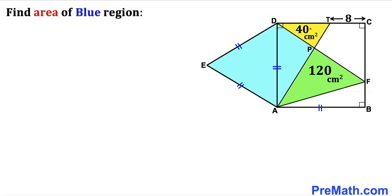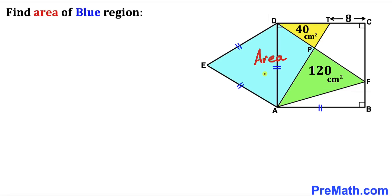Welcome to pre-math. In this video we have yellow and green triangles fully confined in square ABCD. The area of the yellow triangle is 40 cm², the area of the green triangle is 120 cm², line segment TC is 8 cm, and triangle AED is an equilateral triangle. We are going to calculate the area of the blue shaded quadrilateral APDE.